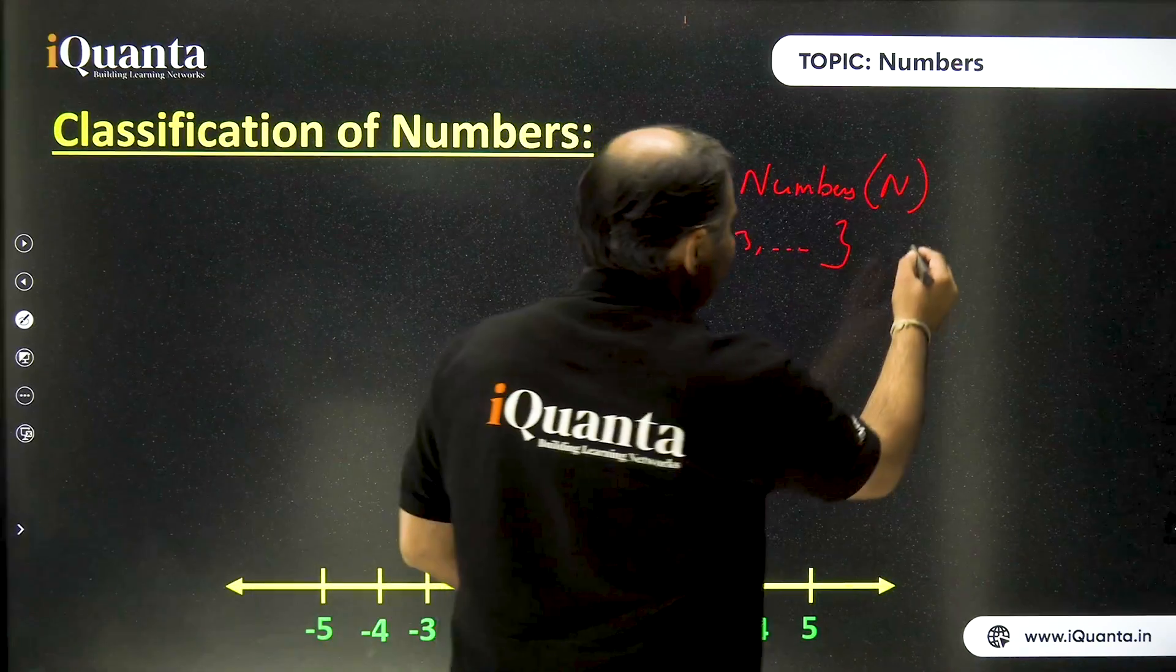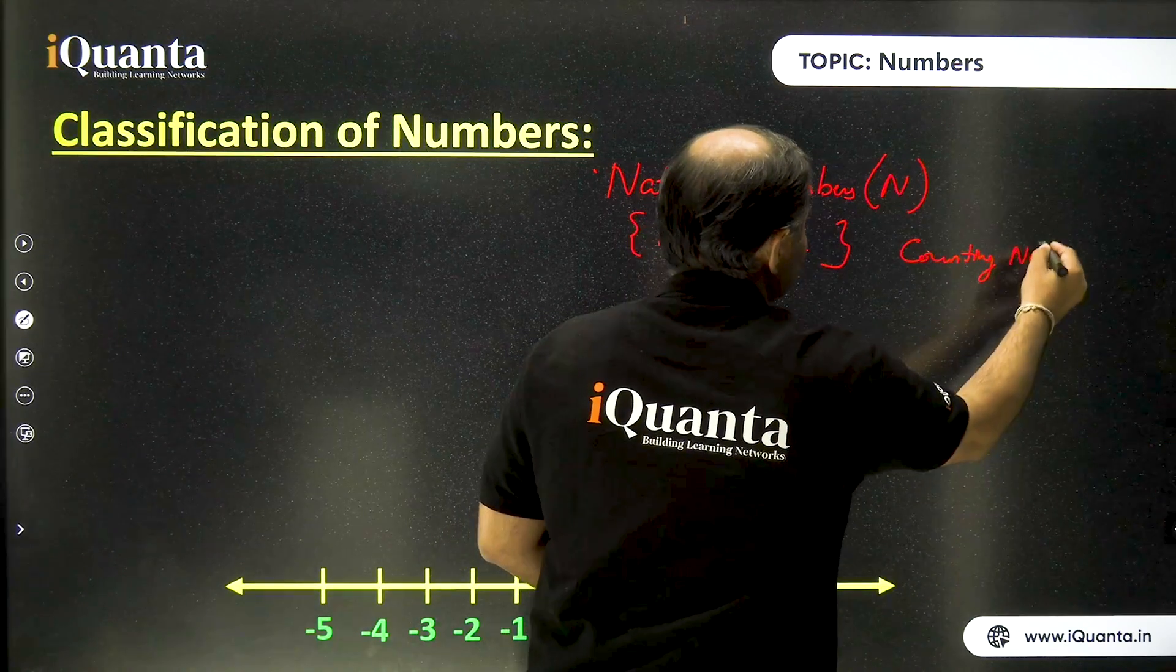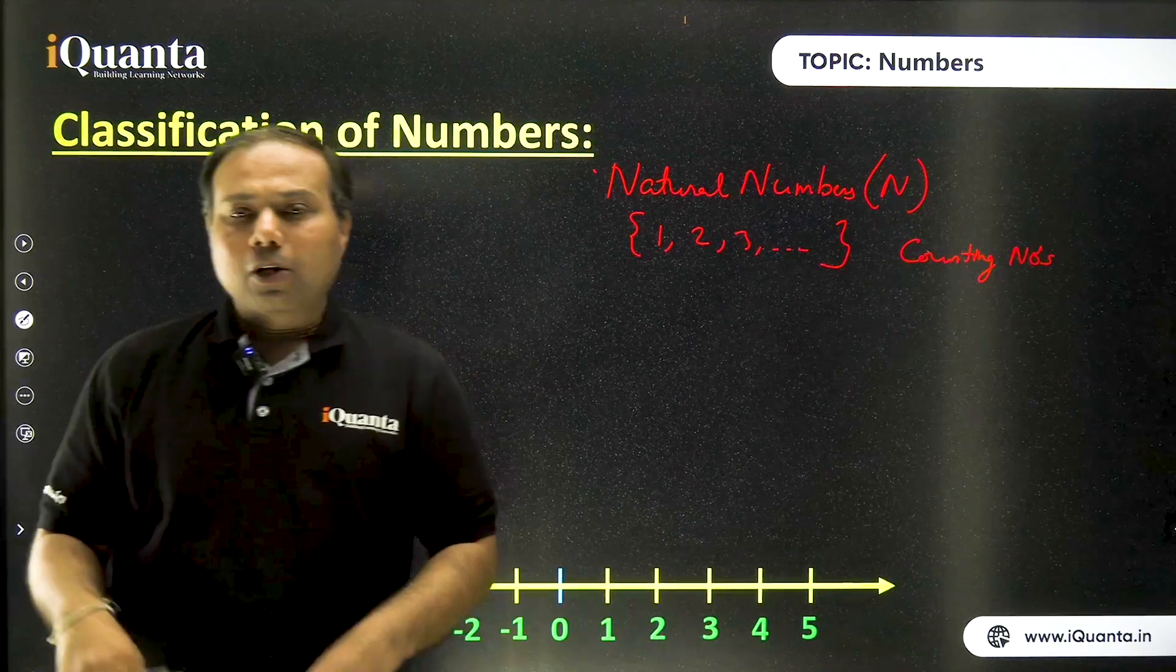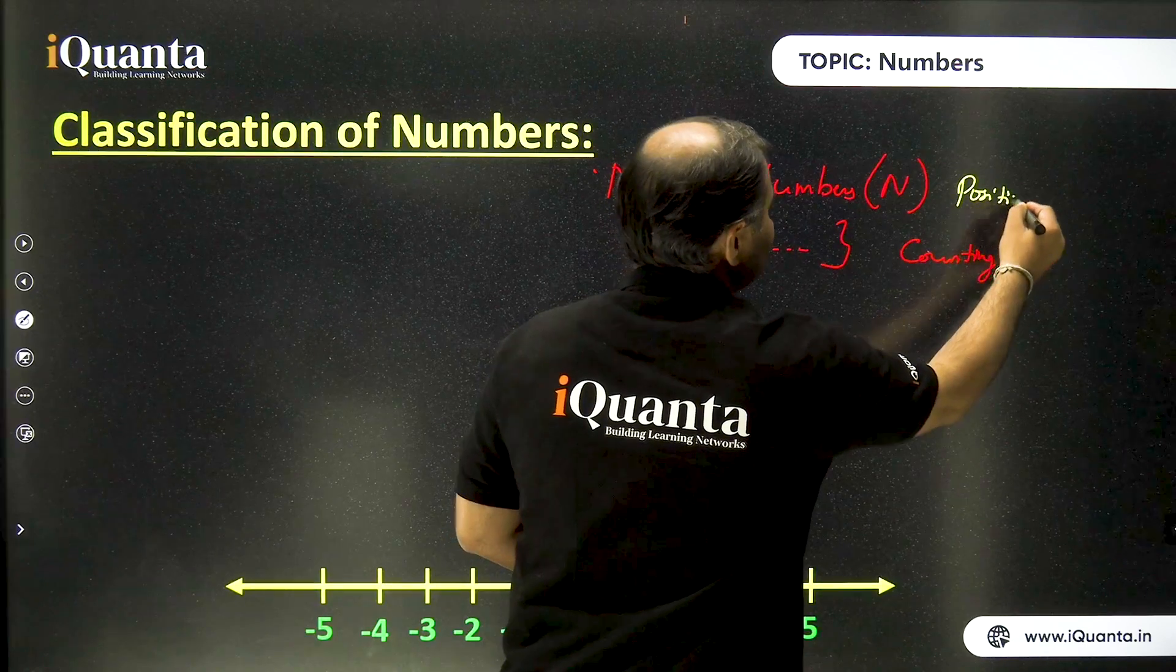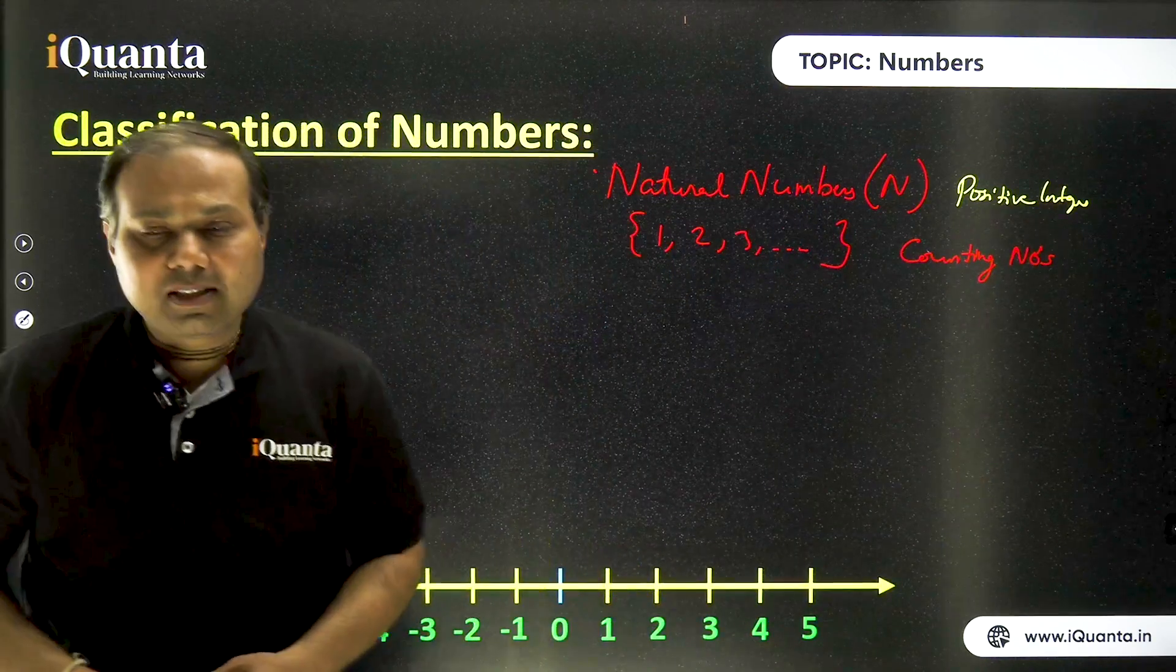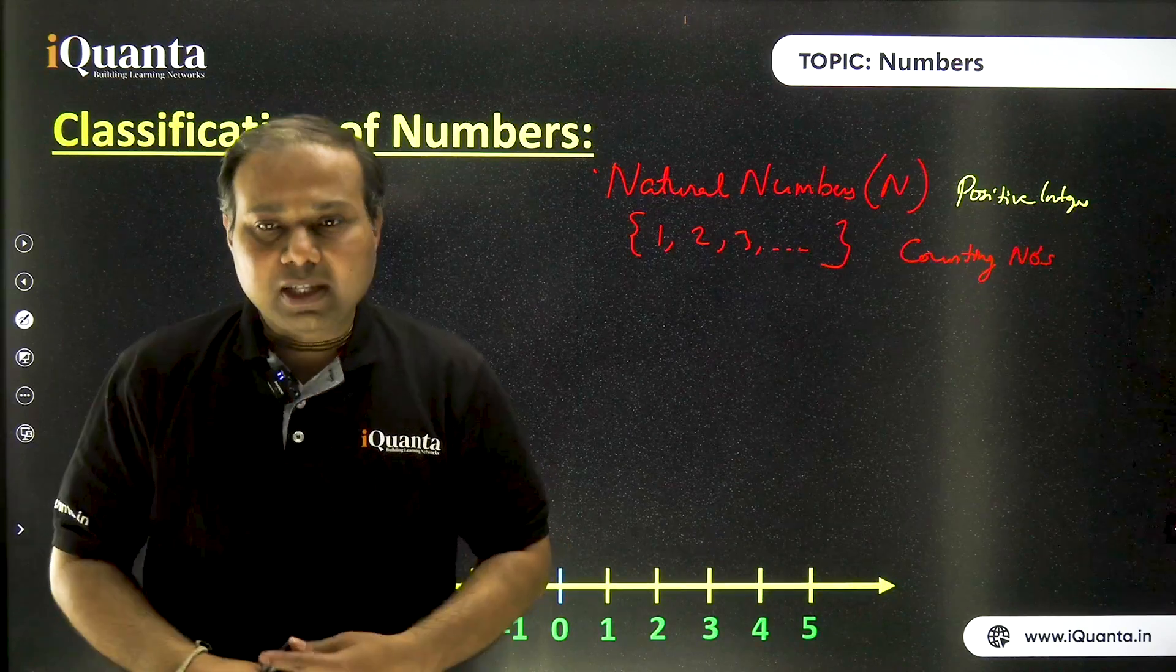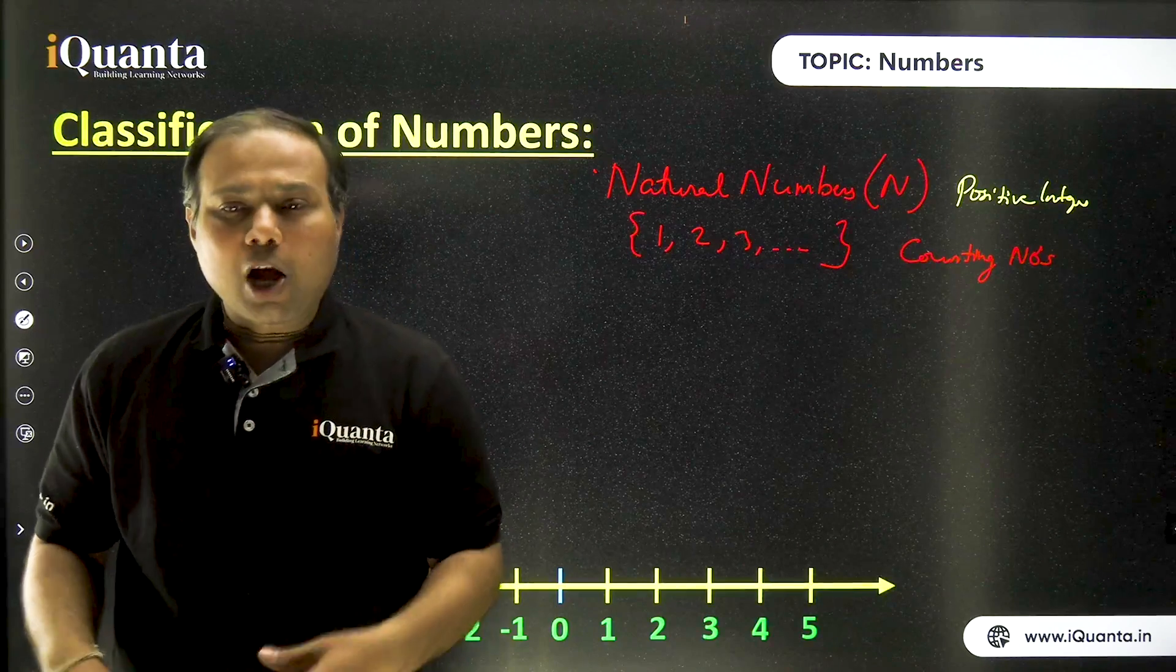So as I said, the common term for these numbers is positive integers. So whenever we are counting anything, we always start our counting from number one, then two, then three, then four and so on. Like if I ask you, how many students were there in your class? So you will start counting from one only. One, two, three and so on. How many fingers do you have? Again, one, two, three, four and so on.